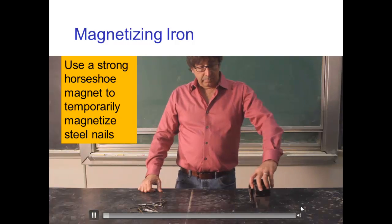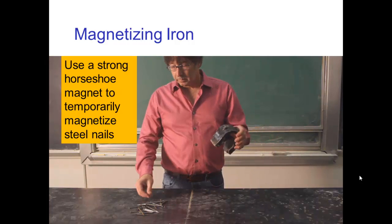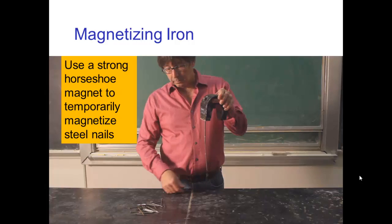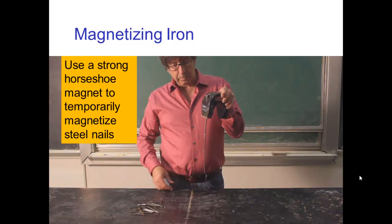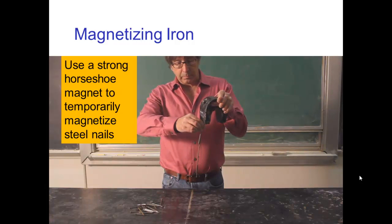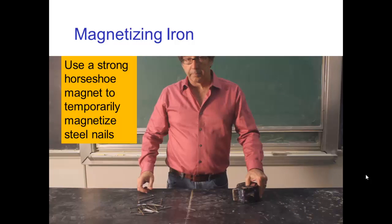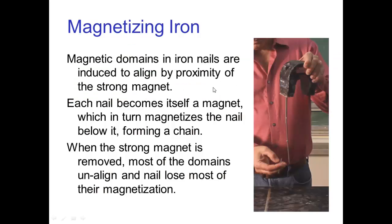So we can see this in this demonstration. I have a strong horseshoe magnet and I've put a nail on it. Now that nail is magnetized and you can see that it magnetizes the nail below it and the one below that. But now if I take it away, it returns to being unmagnetized. The magnetic domains in the iron nails are aligned by proximity to the strong magnet so that each nail becomes a magnet temporarily. And when I remove the top nail from the strong horseshoe magnet, the domains return to being unaligned and the nails lose most of their magnetization.